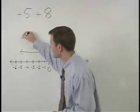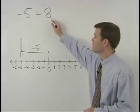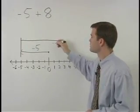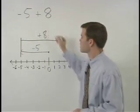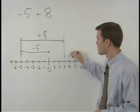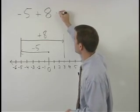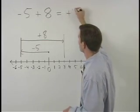From there, positive eight then moves us eight units back to the right. So we end up at positive three. So negative five plus eight is positive three.